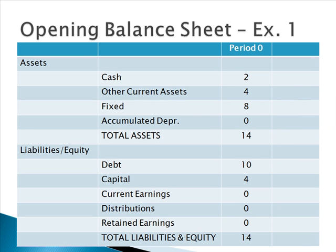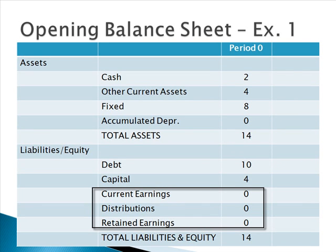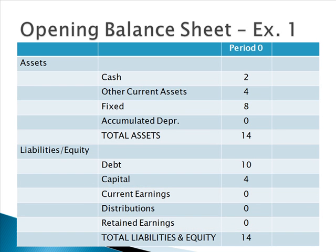Beneath the liabilities and equity section, we see we have some debt and capital that's been paid in. Current earnings is zero — it must always be zero on the opening sheet since there's no income yet. Distributions, which can be called dividends or anything else, must also be zero since there are no earnings yet. We'll assume this company has a policy of 50% of earnings paid out as dividends to cover LLC taxes, since an LLC is a pass-through organization. The numbers here are very small and can represent dollars, tens of thousands, or millions — we're using small numbers to make it easy to work with.